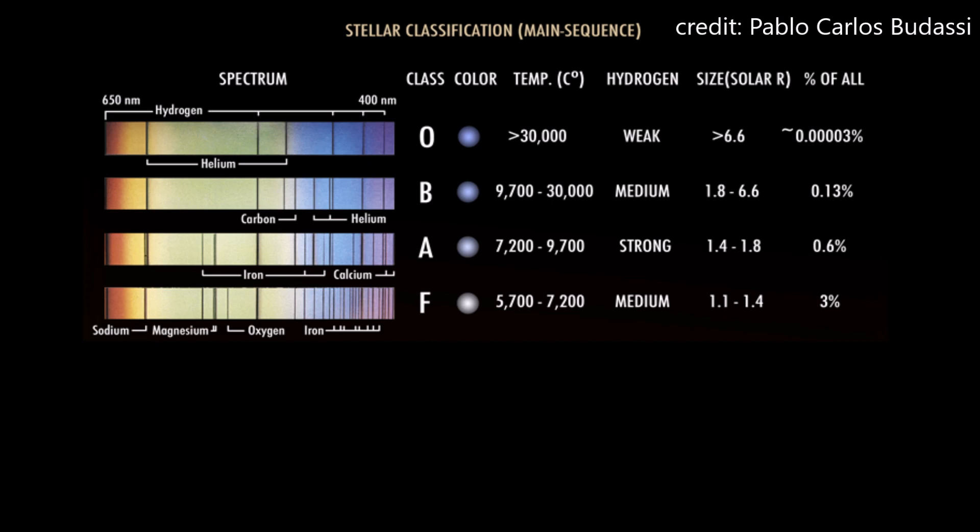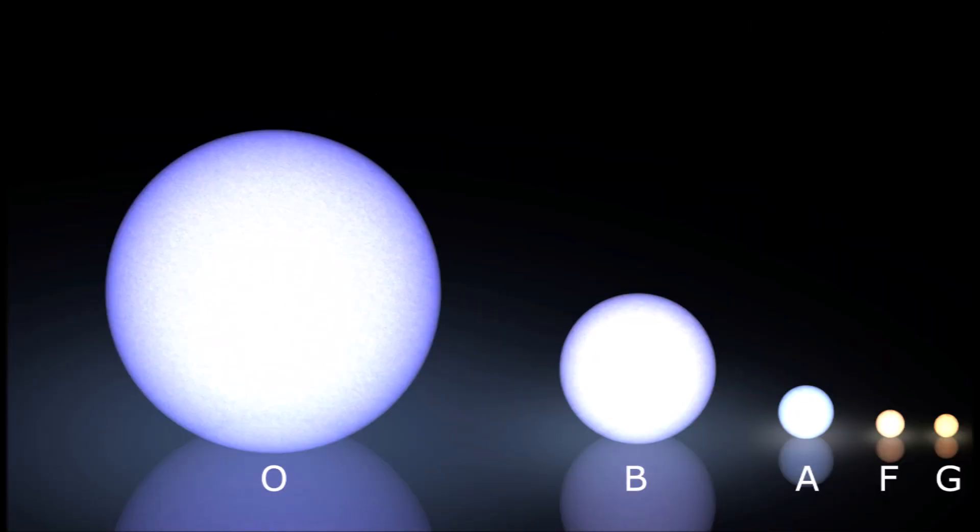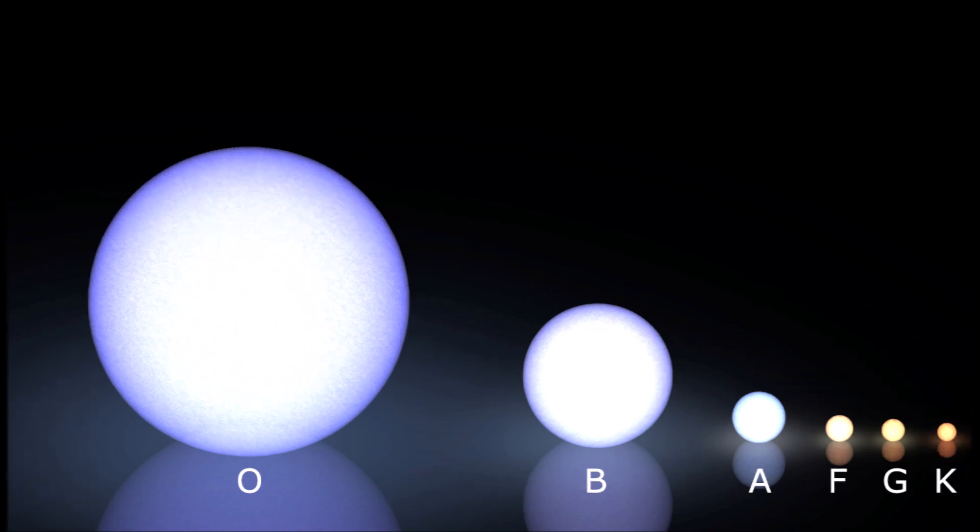They are also known as yellow dwarfs and are similar in temperature to our own sun, which is a G-type star. G-type stars have temperatures ranging from 5,000 to 6,000 Kelvin and are yellow in color. K stars are orange and have temperatures ranging from 3,500 to 5,000 Kelvin.